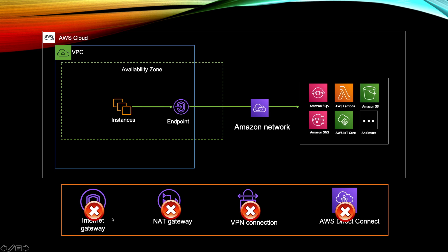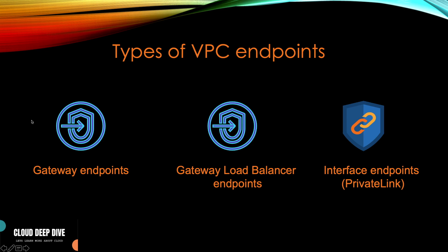In addition, you don't need any internet gateway, NAT gateway, VPN connection, or Direct Connect — you don't need any of those things, so you are saving money. Now, endpoints also cost money, but if you compare the cost — for one month of data processed through NAT gateway versus an endpoint — it will charge you less. And for gateway endpoints, which is one type of endpoint, there is no charge at all. So by using endpoints you will save money, secure your data, and get more reliability because it's using the Amazon network.